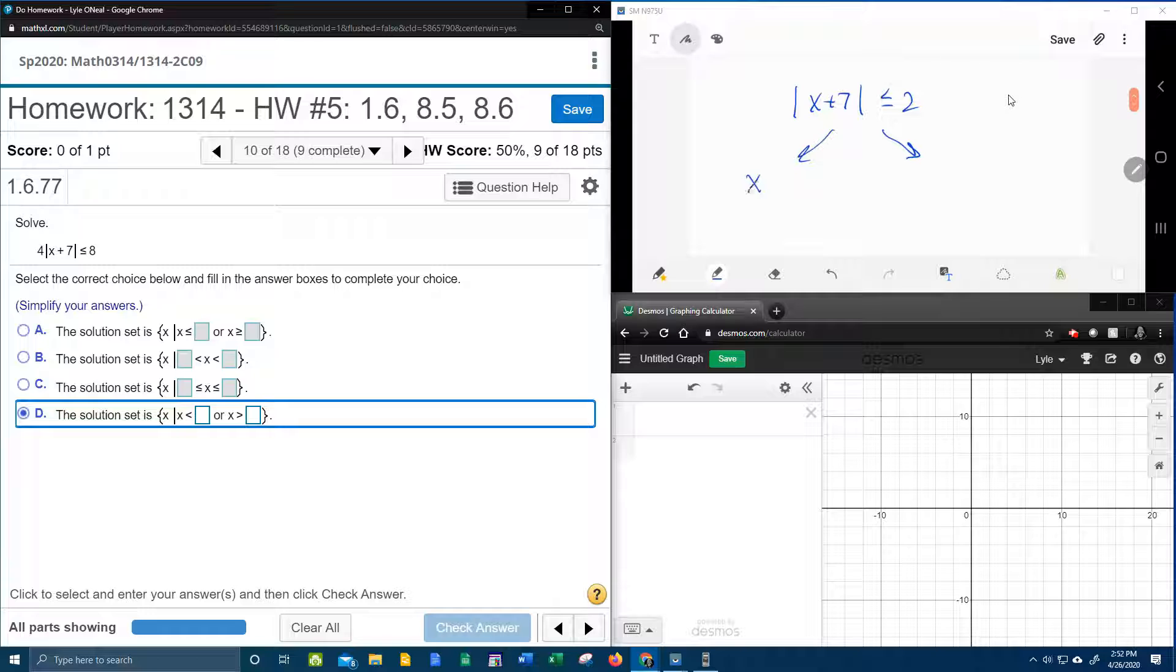So we're going to have x plus 7 less than or equal to 2. Notice the first time you split it, you leave it exactly the same. And the second time, we're going to say x plus 7. Notice the stuff in the absolute value stays the same, but the inequality and the 2 have to change. So it becomes greater than or equal to negative 2.